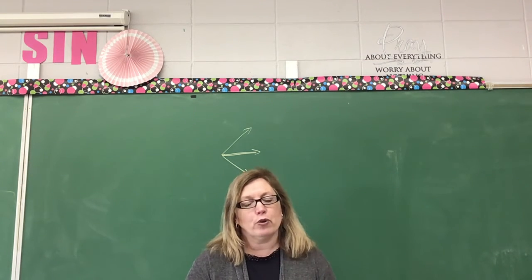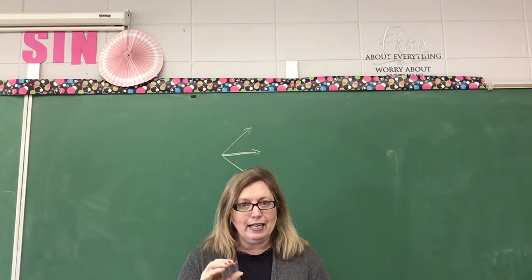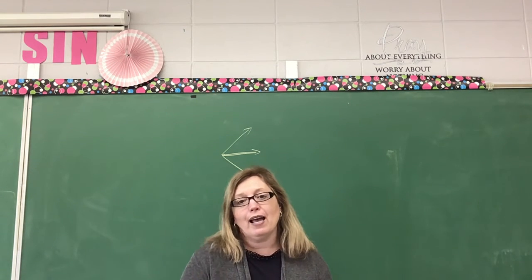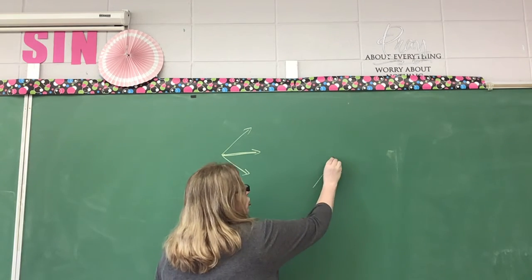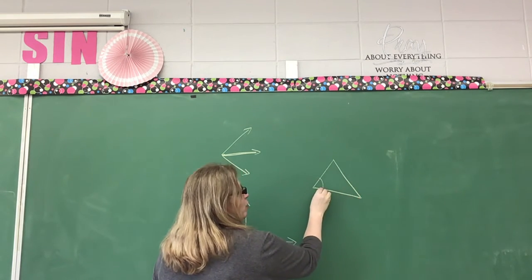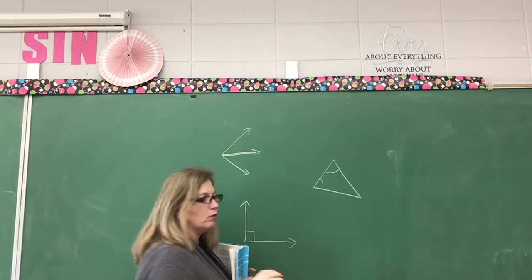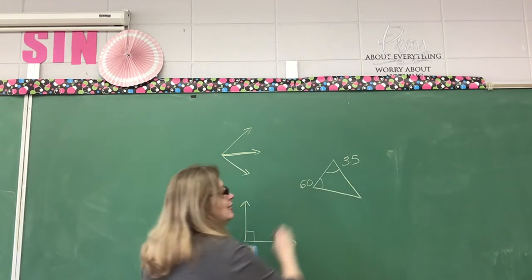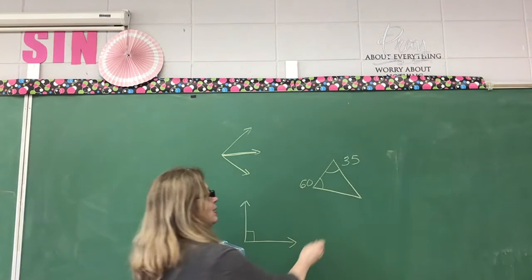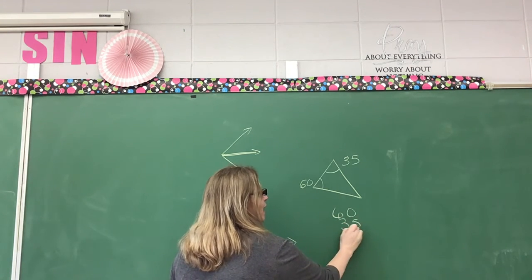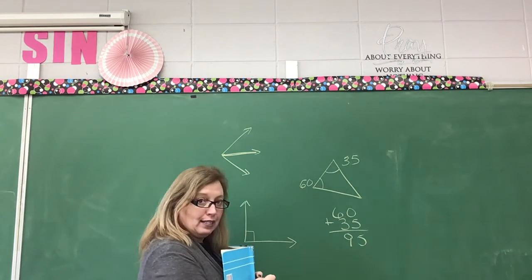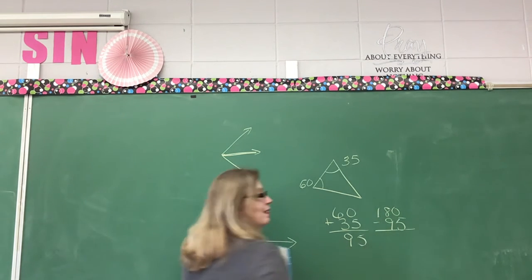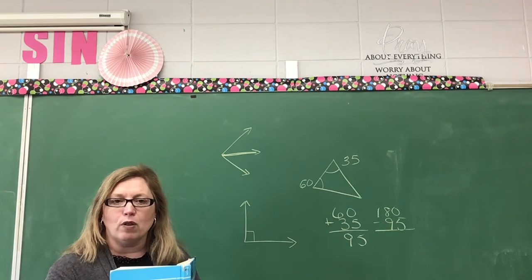If two angles equal 180 degrees, they are supplementary. Now, if I give you a triangle and I give you the measurements of two angles — let's say this one is 35 and this one is 60 — what is the third angle? You're going to take 60 plus 35 and get 95, then take 180 minus 95, and that gives you your answer for the missing angle of a triangle.